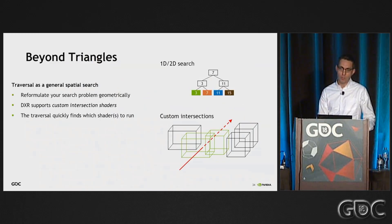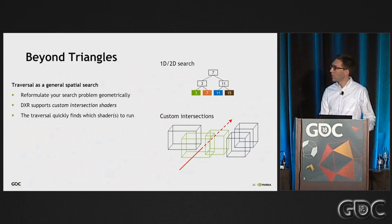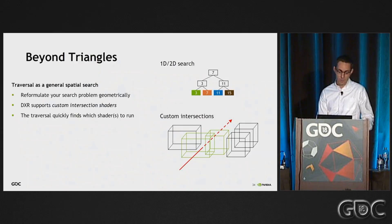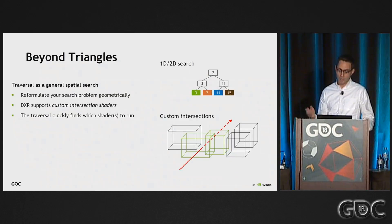There's of course now a lot of focus on using ray tracing for intersecting triangles, but it's not the only thing we can do with ray tracing. The DXR API actually supports custom intersection shaders, so you can put bounding boxes in a data structure and then compute an intersection yourself in the shader.